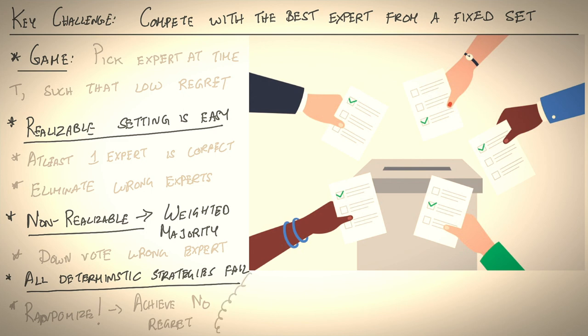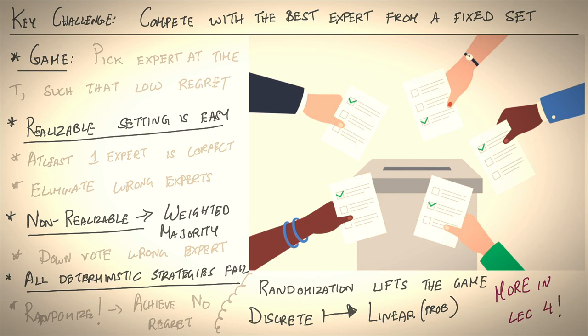Now, randomization has a really cool mathematical interpretation. It allows us to lift the game from a discrete space of options, which is inherently non-convex, to a space of probabilities, which is linear, and which allows us to leverage powerful convex optimization techniques that we will talk about in depth in lecture four. Till next time.